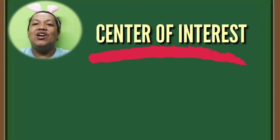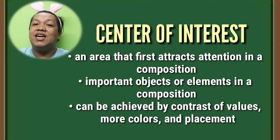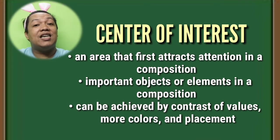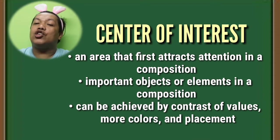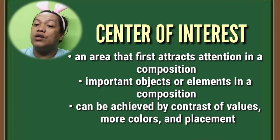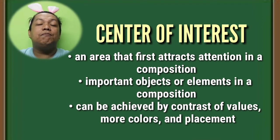The second visual design element refers to the center of interest — an area that first attracts attention in a composition. Important objects or elements can be achieved by contrast of values, contrast of colors, and contrast of placements. As projected on your screens, the center of interest is the starfish, not the stones surrounding it.